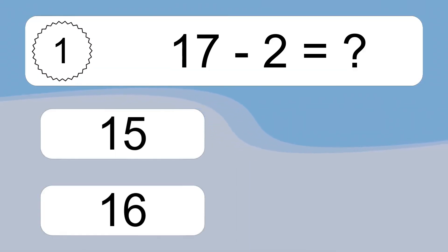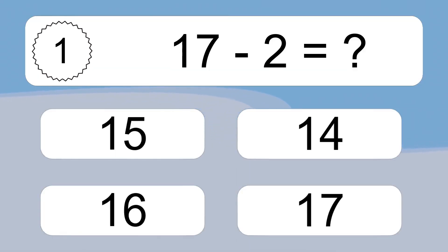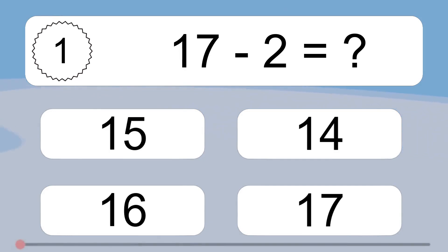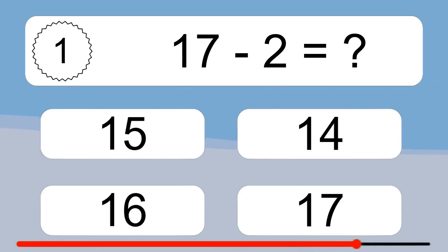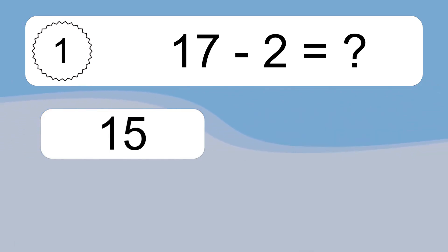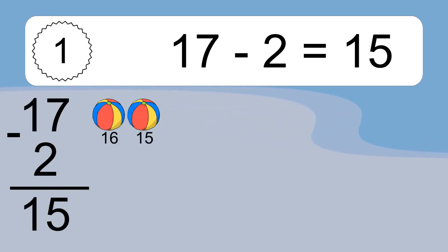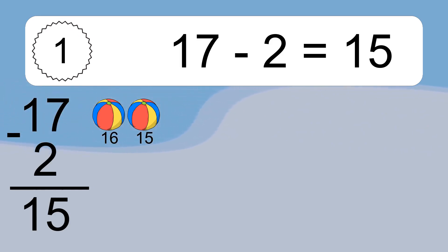17 minus 2 equals what? 17 minus 2 equals 15. Let's count it. 16, 15.